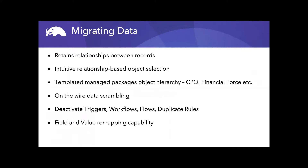Focusing on the relational data migration aspect of Snapshot: first, we want to maintain relationships between records. Any records you move — accounts, opportunities, contacts, cases — the biggest problem in moving data between orgs is that a new ID is created. A full copy sandbox retains the IDs, but even there, if you bring in new or updated data from production, a new ID is created and all the relationships between your records are lost. Snapshot has the capability to retain those relationships, so you can trace from opportunity to opportunity line items, to products and cases — any relationships will be maintained as part of the migration.